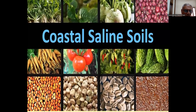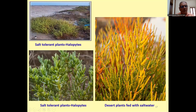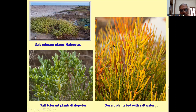Coastal saline soil: in coastal areas of Gujarat there is more coastal saline soil. In this soil, you can grow different crops including tomato and carrot. You can also grow salt-tolerant plants called halophytes, which are found growing even near saline soils. It is a soil-loving plant.